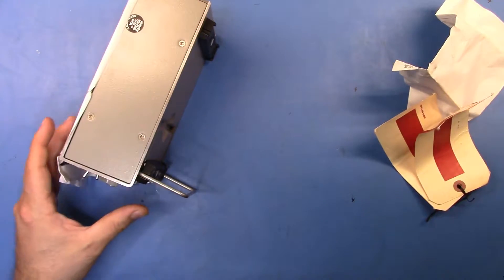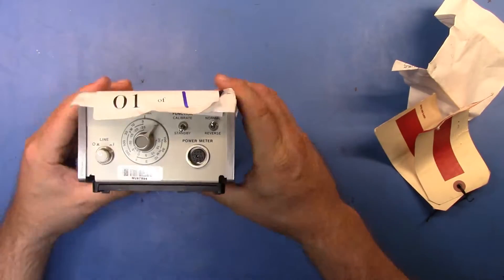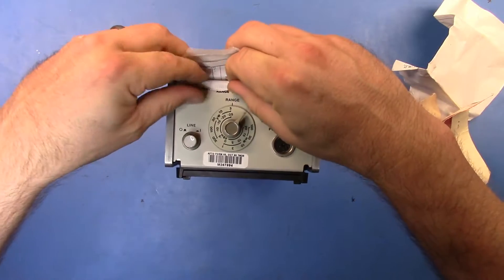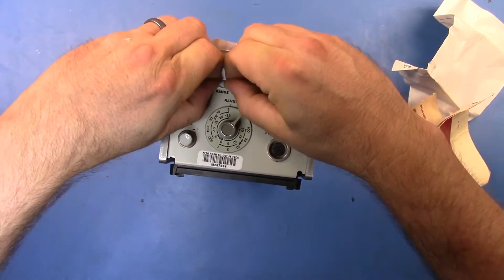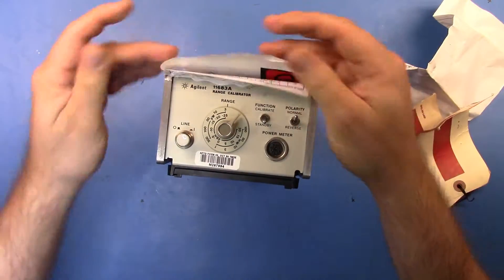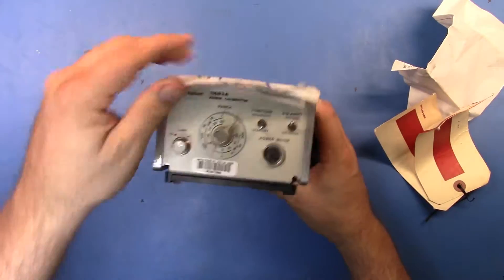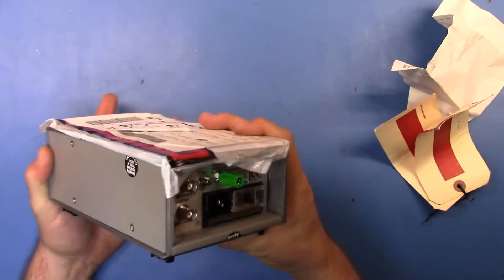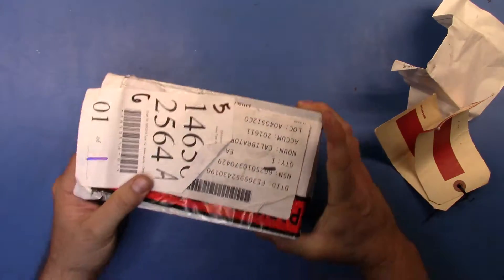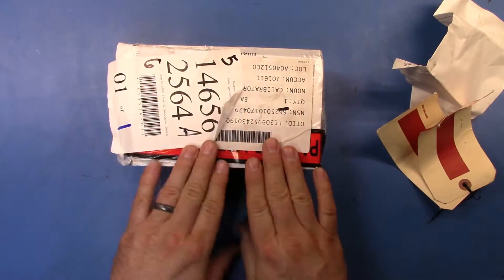If you've seen my 437 video, you would have seen me utilize an 11683A range calibrator already. So you might be asking, well what the hell am I doing buying another one of these? Well, the reason is because of the piece that's here on the back.